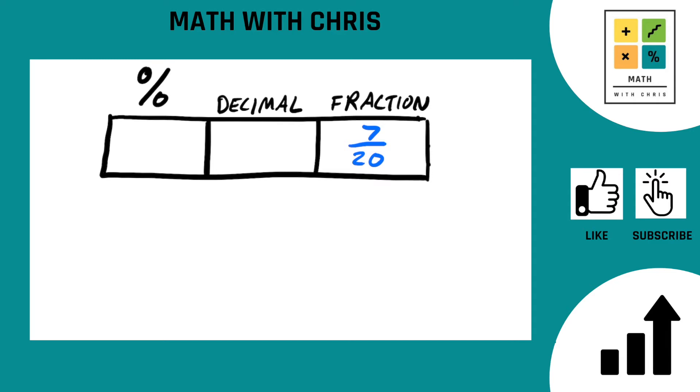How do we convert that to a percent? Well, 7 20ths, let's take that fraction over here. First thing you're going to do, probably in most cases, certainly in this one, you're going to want to set it equal to another fraction and at the bottom of that other fraction is going to be 100 because the percent is always the number over 100 in terms of a fraction.